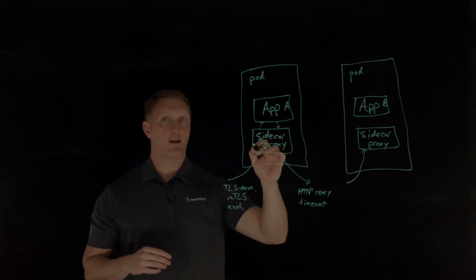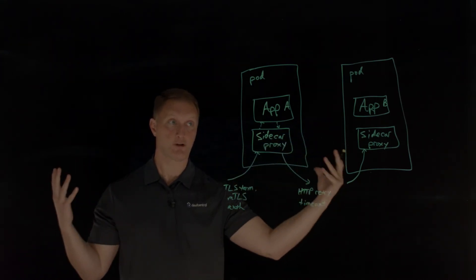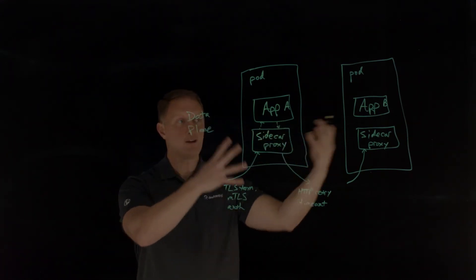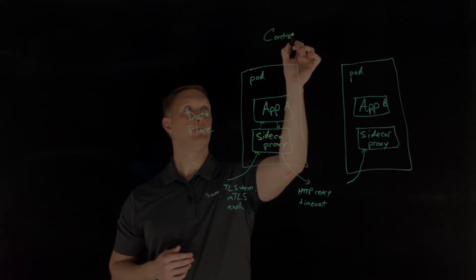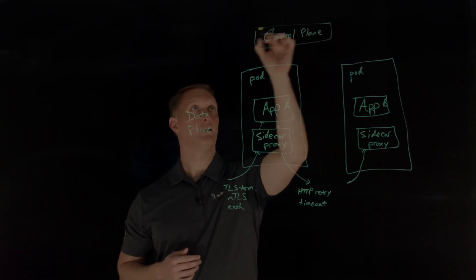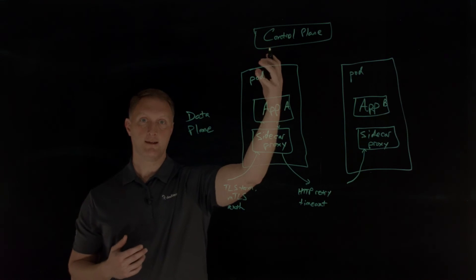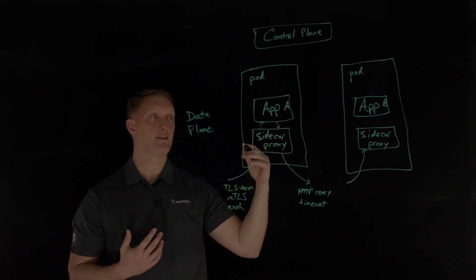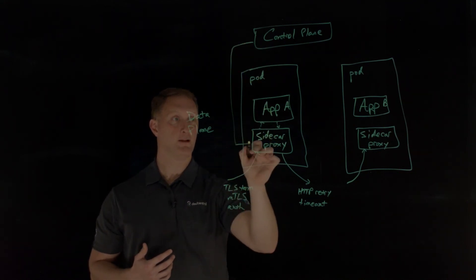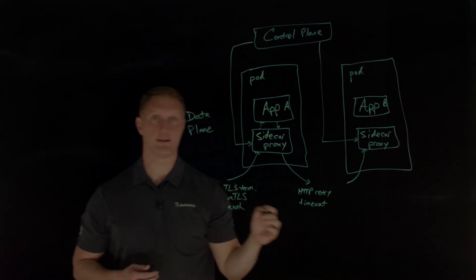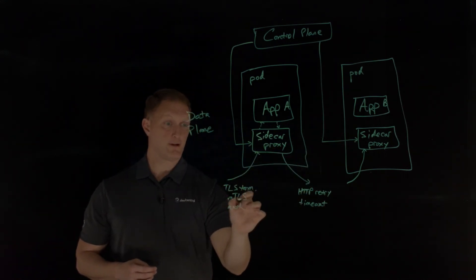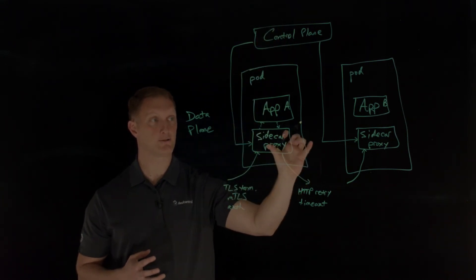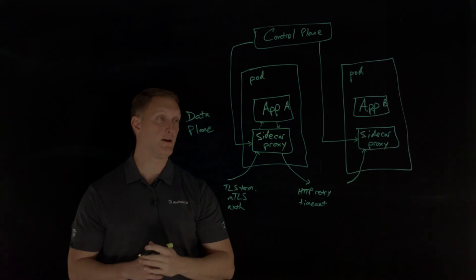Sidecar proxies are what I'm going to call data plane components of the service mesh. This is all the data plane, but in order to configure all this stuff, we have a control plane of the service mesh. The control plane is going to inject sidecars whenever necessary and do administrative tasks. For example, for mutual TLS, certificates need to be renewed — the control plane handles all those administrative functions of what the sidecar proxy needs in order to do its job.